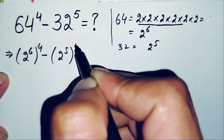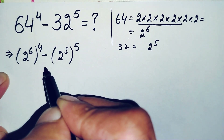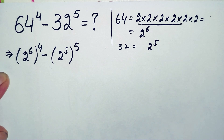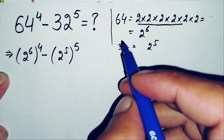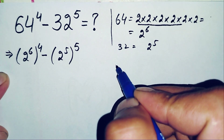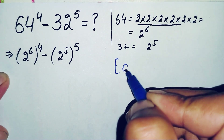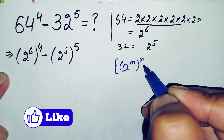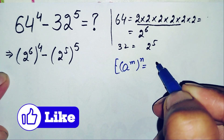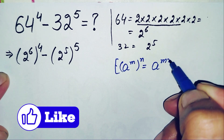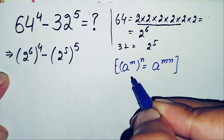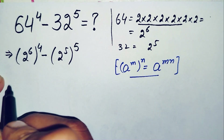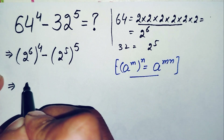In these two terms, we will use the exponential math property: a raised to power m, all raised to power n, which can also be written as a raised to power m times n. We will apply this property to both terms.